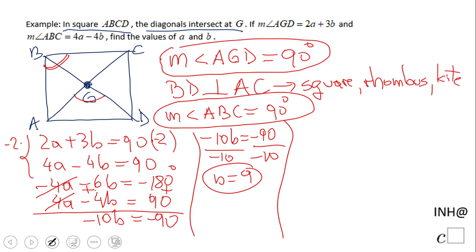Now I need to find a. I'm going to use the first equation: 2a plus 3b equals 90. I'm going to plug in 9 for b: 2a plus 3 times 9, which is 2a plus 27, equals 90. Subtracting 27 from both sides.